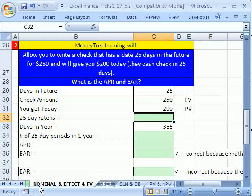We are going to start on Nominal and Effect and Future Value Sheet tab, and we're going to talk about something terrible, short-term loans, money tree loaning. Now, here's the situation.